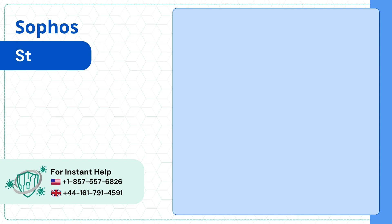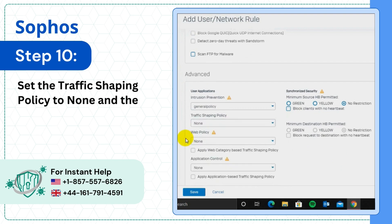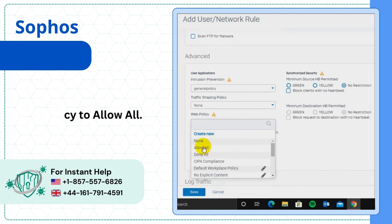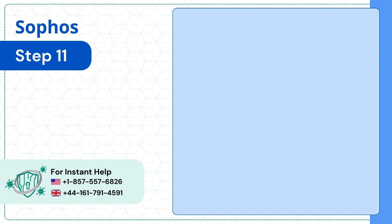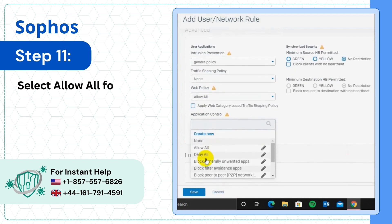Step 10: Set the Traffic Shaping Policy to None and the Web Policy to Allow All. Step 11: Select Allow All for Application Control.